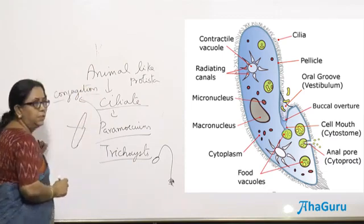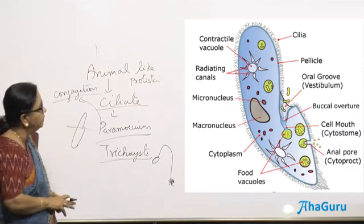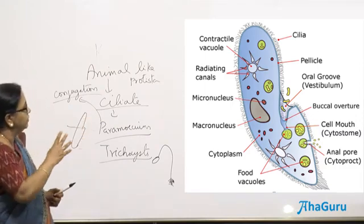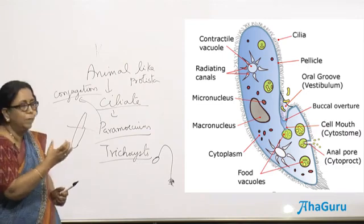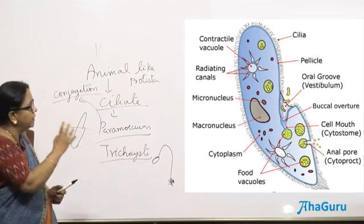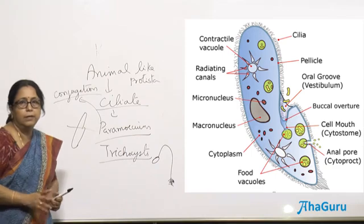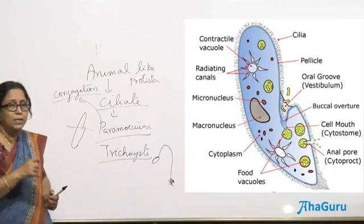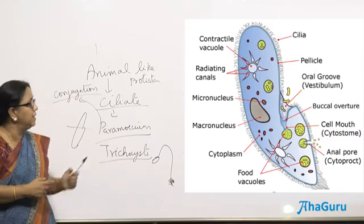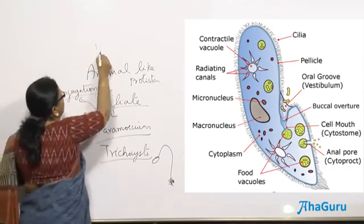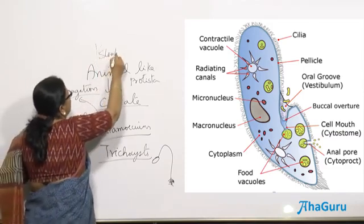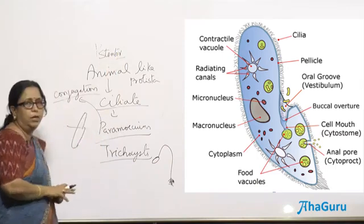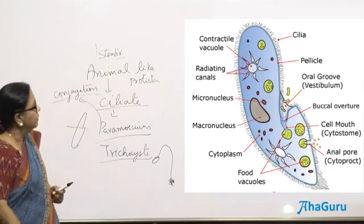The sexual reproduction in paramecium happens through a process known as conjugation. Paramecium shows the highest degree of specialization shown by a single cell, with so much specialization inside. There is one ciliate which is even more complex than this, called stentor, showing the highest degree of complexity.